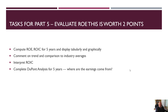Part five: compute the ROE, ROC, and return on invested capital for five years and display them both tabularly and graphically. Comment on the trend in comparison to the industry average. Interpret what return on invested capital is telling us. Then complete the DuPont analysis for five years and identify where the earnings are really coming from.